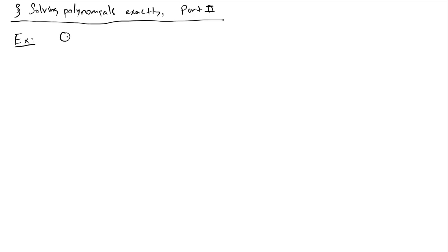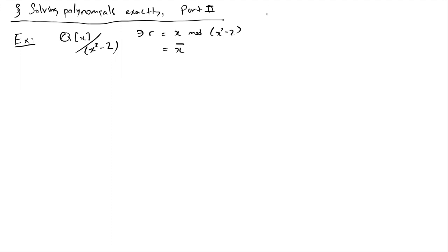Let's start with one very simple example. If I take Q[x] modulo x squared minus 2, I'm adding the two square roots of 2. Here we have r, that was x mod f, or x mod x squared minus 2. Maybe I refer to this as x-bar — so instead of writing x mod polynomial, I can write x-bar to denote the image of x. What happens is that r and minus r are the two roots.